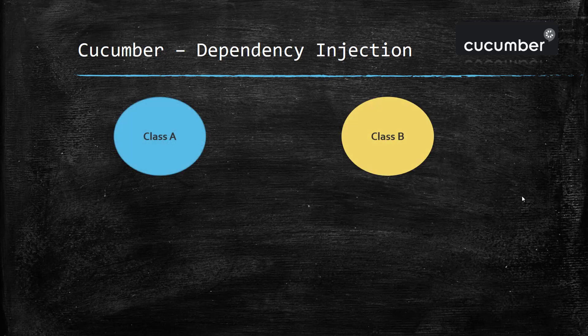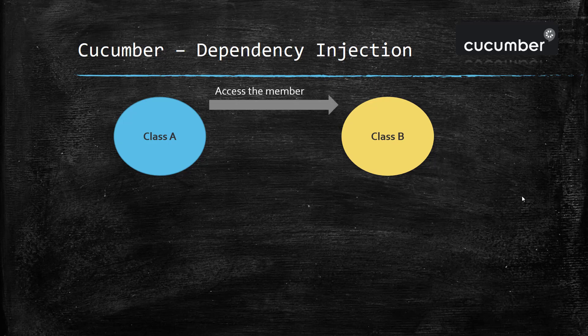Assume there is a Class A and a Class B. Class A wants to access the member which is present inside Class B. So the simplest approach is to create the object of Class B inside Class A and use the variables as well as the methods which are being exposed by Class B.